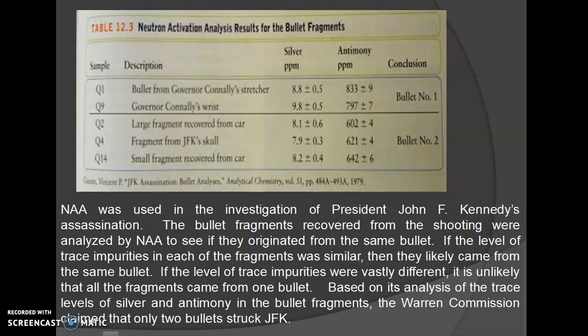This is a forensic case in which NAA analysis was used to analyze the bullet fragments from President John F. Kennedy's assassination. Different fragments of the bullet found at that location were analyzed for silver as well as antimony concentrations. Based upon the silver and antimony concentrations, it was concluded that Q1 and Q9 belong to bullet number 1, and Q2, Q4, and Q14 belong to bullet number 2. Thus it was concluded that based upon the analysis, it was only two bullets that struck John F. Kennedy during his assassination.